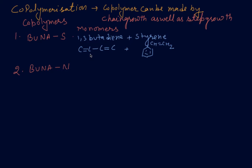Now we are going to discuss copolymers. First I am discussing BUNA-S, which I have told you in the previous class. The monomers of BUNA-S are 1,3-butadiene and styrene.